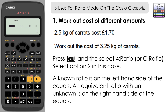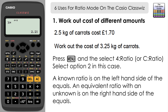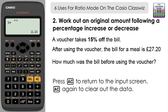Ratio mode is set up with a known complete ratio on the left-hand side, and a ratio with an unknown part on the right. We know 2.5 kilograms costs £1.70, so we fill that in on the left. On the right we know the amount is 3.25, and x is the unknown cost. Press equals, convert to decimal with SD, and the cost is £2.21.